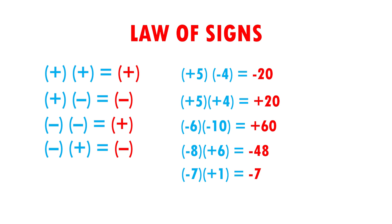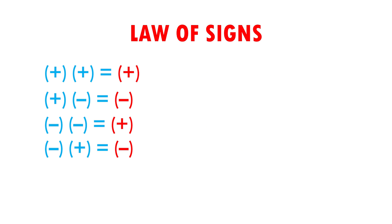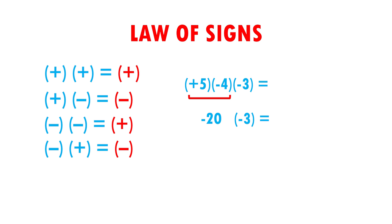Now we go with three consecutive multiplications. I have plus five times minus four times minus three. First, I'm going to multiply plus five times minus four. Positive times negative is negative, and five times four gives me 20. I have minus 20 and the minus three goes down exactly the same. Now I multiply minus 20 times minus three. Negative times negative gives me positive, and 20 times three gives me 60. Our result is plus 60.